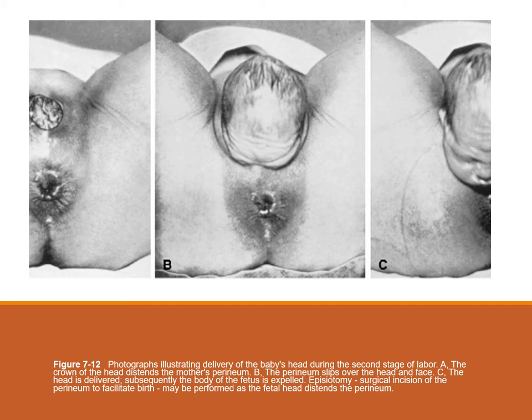This shows the second stage — the expulsion stage. In figure A, the crown of the head distends the mother's perineum. In figure B, the head and face have slipped through the perineum. In figure C, the head is completely delivered and we are waiting for the body of the fetus to be expelled.